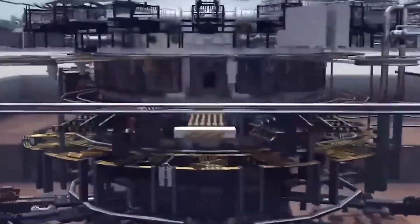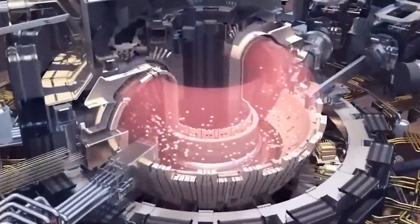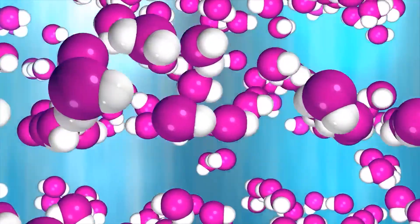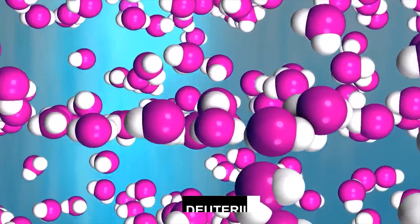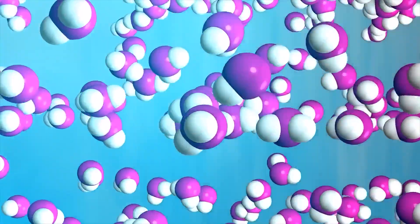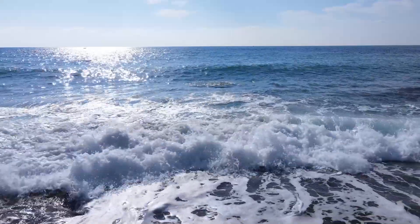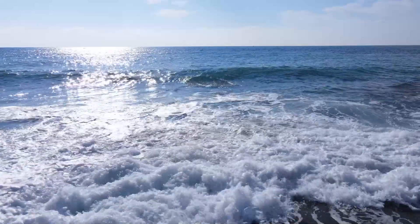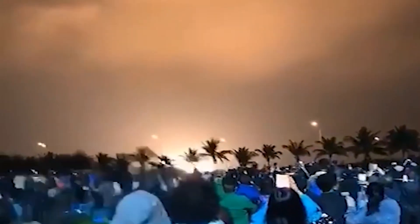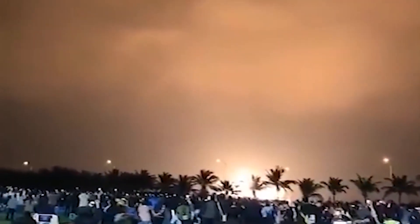In principle, it is possible to extract deuterium, which consists of heavy hydrogen atoms, from the oceans of our planet. It is estimated that a single liter of seawater contains a sufficient amount of fusion material to generate energy equivalent to that produced by 300 liters of gasoline. Hence, China's artificial sun holds the potential to provide an inexhaustible source of energy.